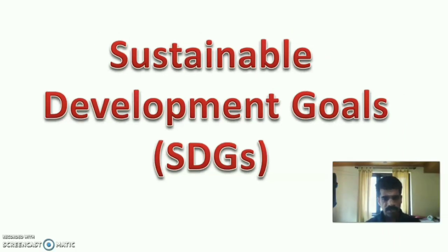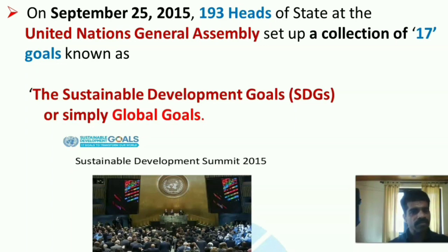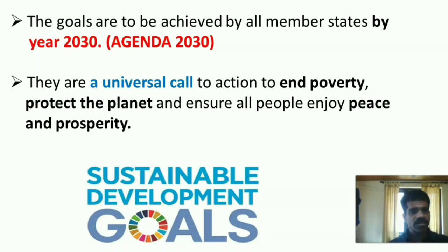After the Millennium Development Goals, from 2015 onwards, the world focused on another goal — Sustainable Development Goals — from 2016 to 2030. From the 2010 Millennium Development Goals Summit, representatives of the state requested the Secretary General to initiate thinking on the Global Development Agenda beyond 2015. Later, on September 25, 2015, 193 heads of state at the United Nations General Assembly set up a collection of 17 goals known as the Sustainable Development Goals, or simply the Global Goals, to be achieved by all member states by the year 2030. This is known as Agenda 2030.